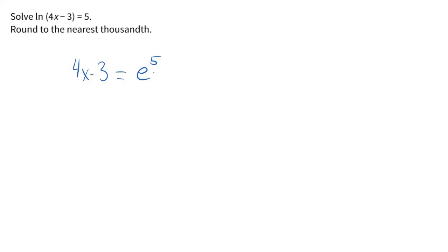Hey, now this is not a pleasant number. I'd just leave it like that for now. Let's get x by itself. So let's add 3 to both sides. Of course, those would go away. And let's divide 4.